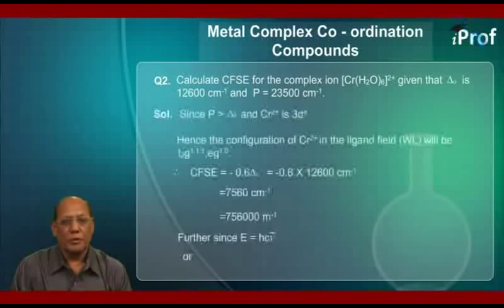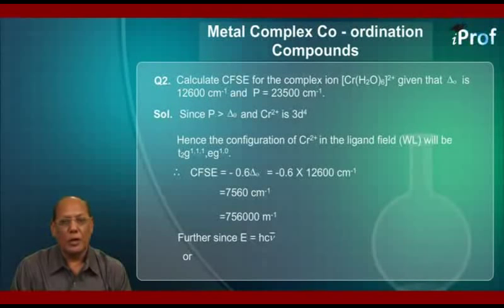The solution of this question is: since P is more than Δₒ and Cr²⁺ ion is 3d⁴, hence the configuration of Cr²⁺ in the ligand field of weak ligands will be t2g³ eg¹.